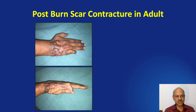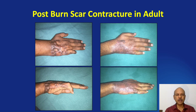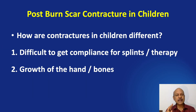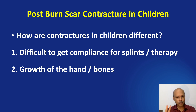When there is a post-burn contracture in an adult, there is absolutely no problem. You can put in a skin graft and get a very good result after releasing the contracture. But when it comes to children, it is going to be slightly different. There are many differences between contractures in children and contractures in adults. There are two main differences that I can think of.